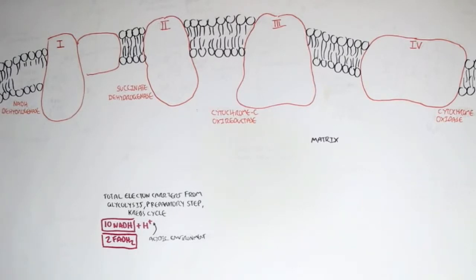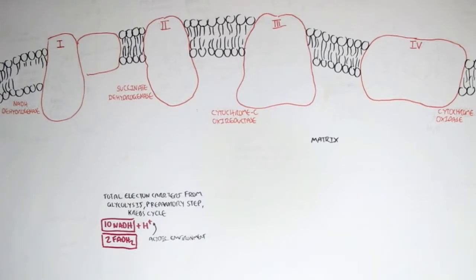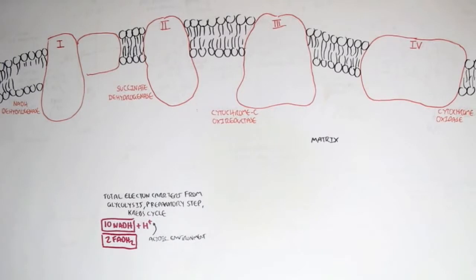Essentially, the electron transport chain is where an electron is being transported through this chain — complex 1, 2, 3, and 4. These electrons come from the electron carriers, the 10 NADHs and 2 FADH2s, obtained from glycolysis, the preparatory step, and the Krebs cycle. The electrons travel through the chain, and their final destination is oxygen, which is reduced to form H2O. So oxygen is the final electron acceptor. During this process, as electrons move through the chain, hydrogen ions are pumped out, and with these hydrogen ions, ATP is made.